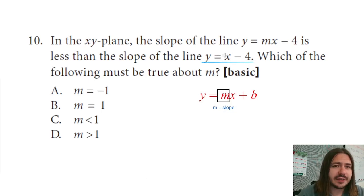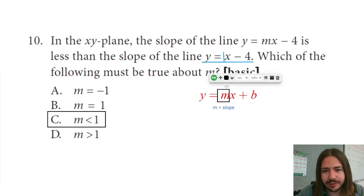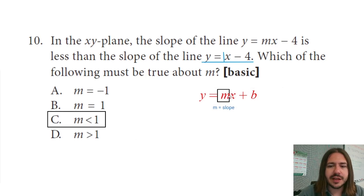You do not see a number in front of the X. There is an assumed 1 here. If it's saying that MX minus 4 has a slope that's smaller or less than the slope of this, that means that this slope, this M value must be smaller than 1. And so our answer is C. There's really not much more to it. You just have to understand, I guess, what it's asking for. And also have a good understanding of this, this slope intercept form of a linear equation, Y equals MX plus B.